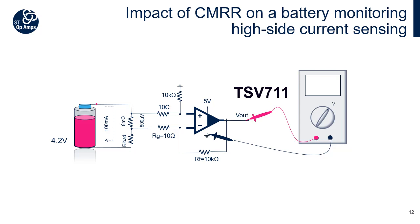We can have an idea of the impact of CMRR on an op-amp used in differential mode to sense a current through a shunt. High-side current sensing is typically selected in applications where ground disturbance is not tolerated and short-circuit detection is required, such as battery current monitoring. The application shows a single op-amp — the TSV711 — with four external resistors, amplifying the small voltage drop across the sensing resistor of 8 mΩ by a gain of RF over RG, or 1000, while rejecting the common mode input voltage. The battery is fully charged at 4.2 V, with 100 mA load, producing an 800 µV differential voltage at the amplification stage input. In a perfect world, the output would be 800 mV.